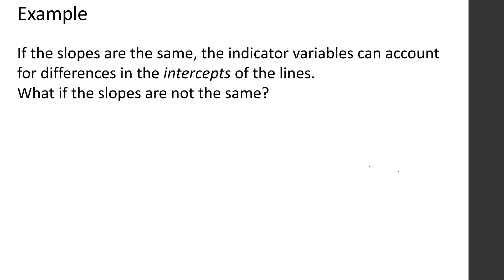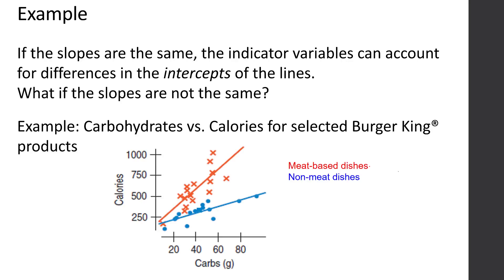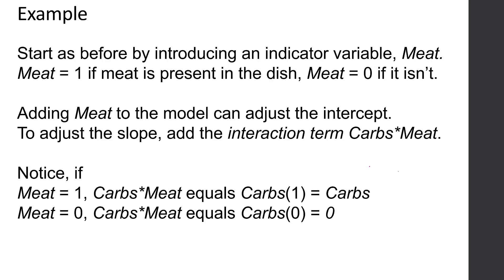The example that we started with had the slopes the same, but the indicator variable can also account for differences when the slopes are not the same. We've got an example - carbohydrates versus calories for selected Burger King products. We've got a scatter plot of our data, calories versus carbs. We've separated the points. The red x's on top are the meat-based dishes, and the blue dots on the bottom are non-meat dishes. If we wanted to incorporate meat into our model, this time it doesn't look like we have equal slopes. I'm suspecting that there's going to be an interaction.